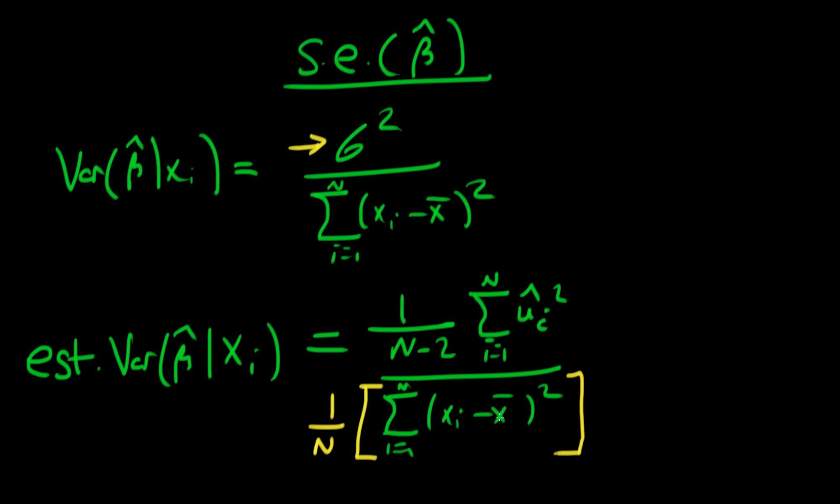If x varies more, this denominator gets bigger, which means the estimated variance as a whole will fall. So what's the intuition behind that?